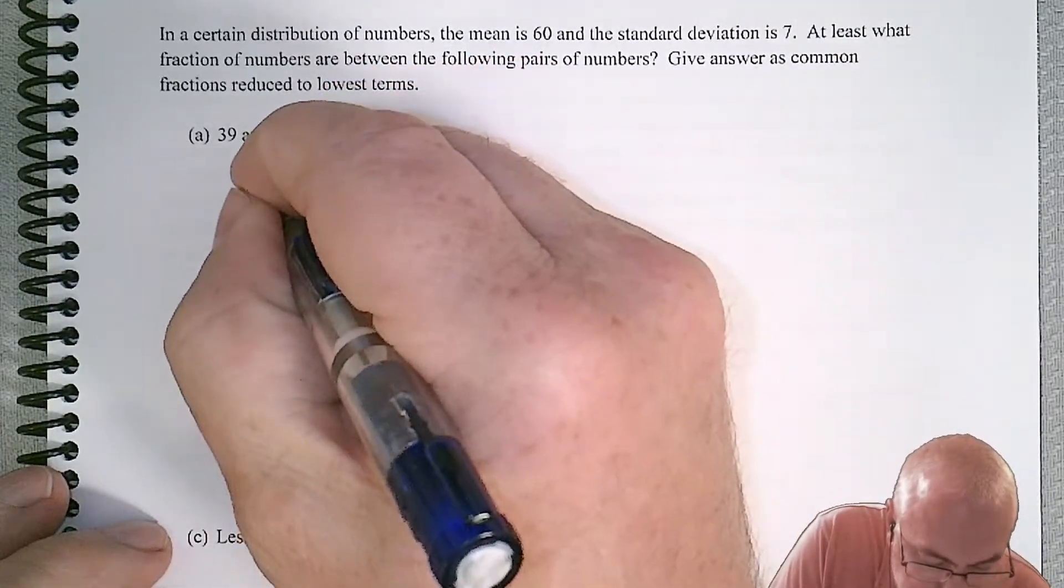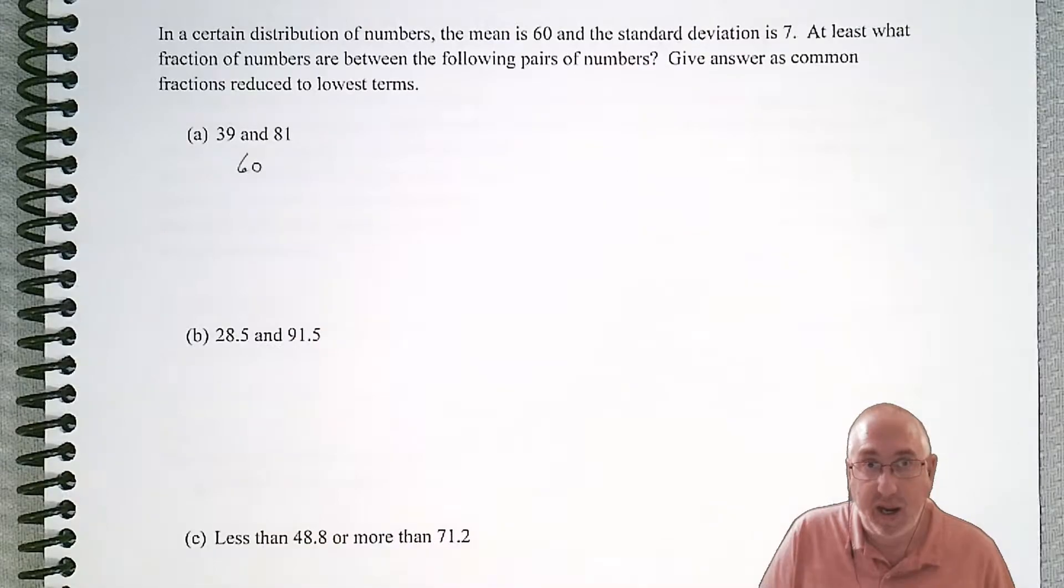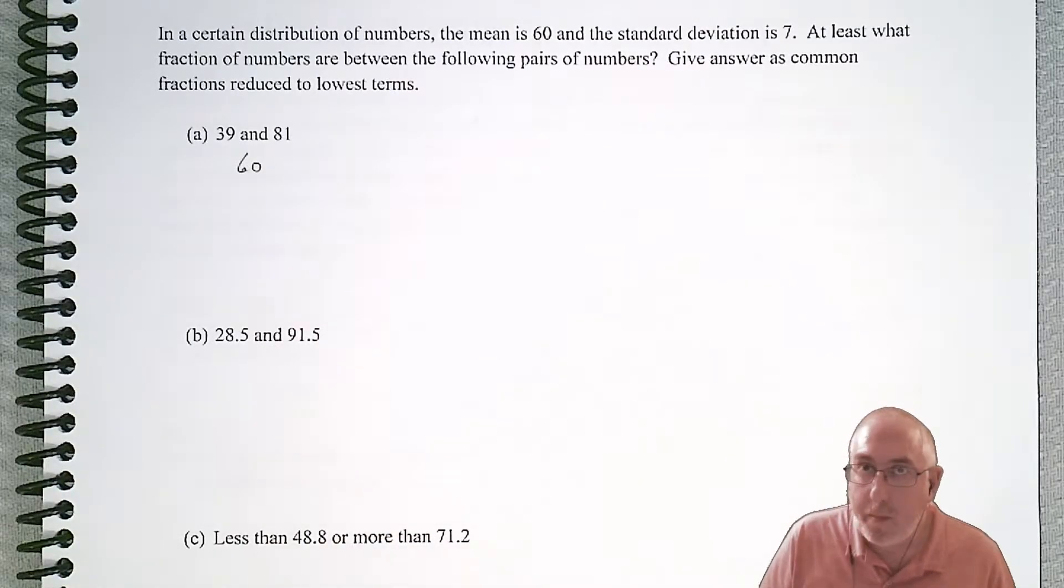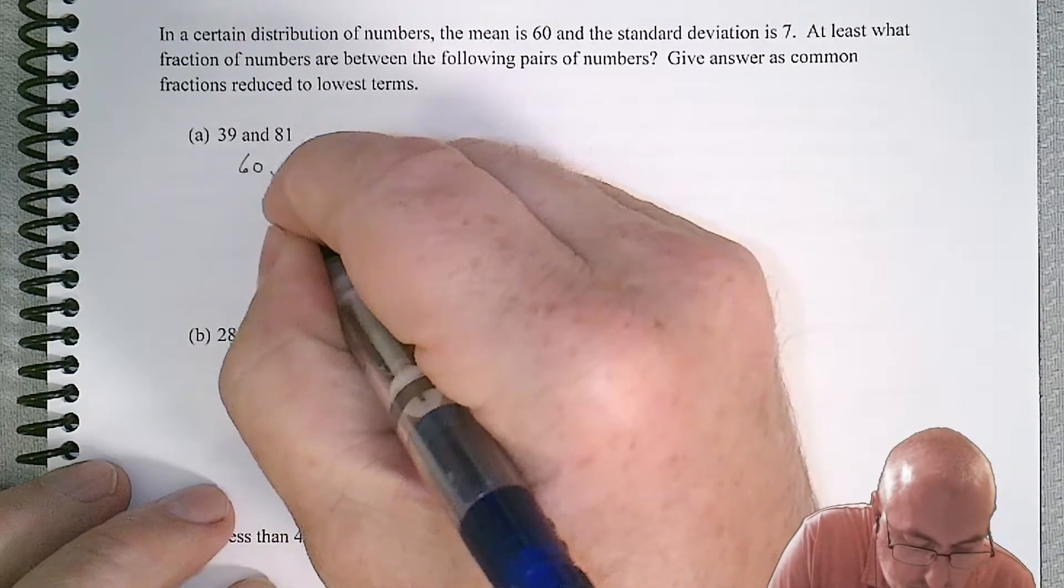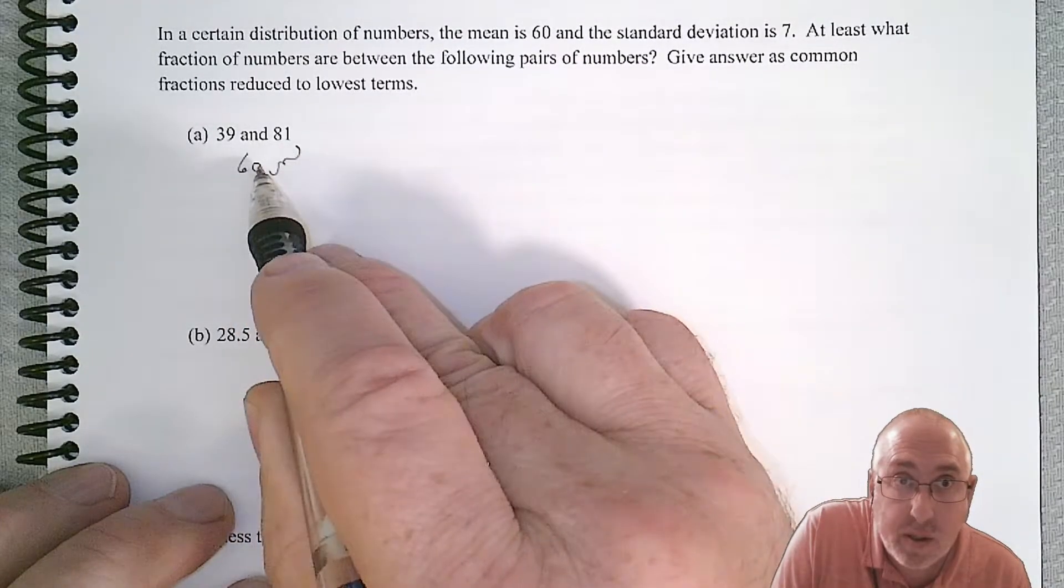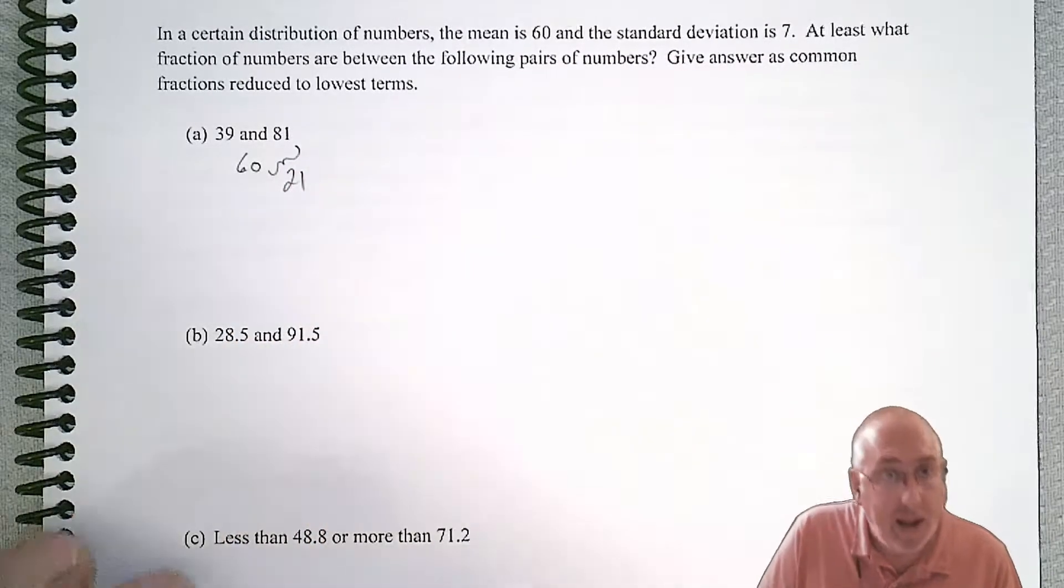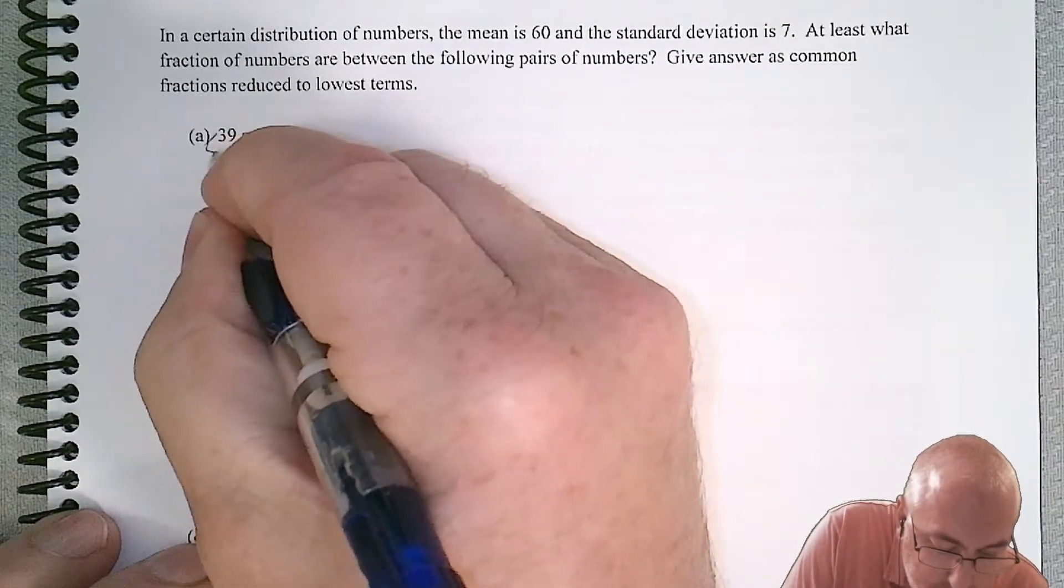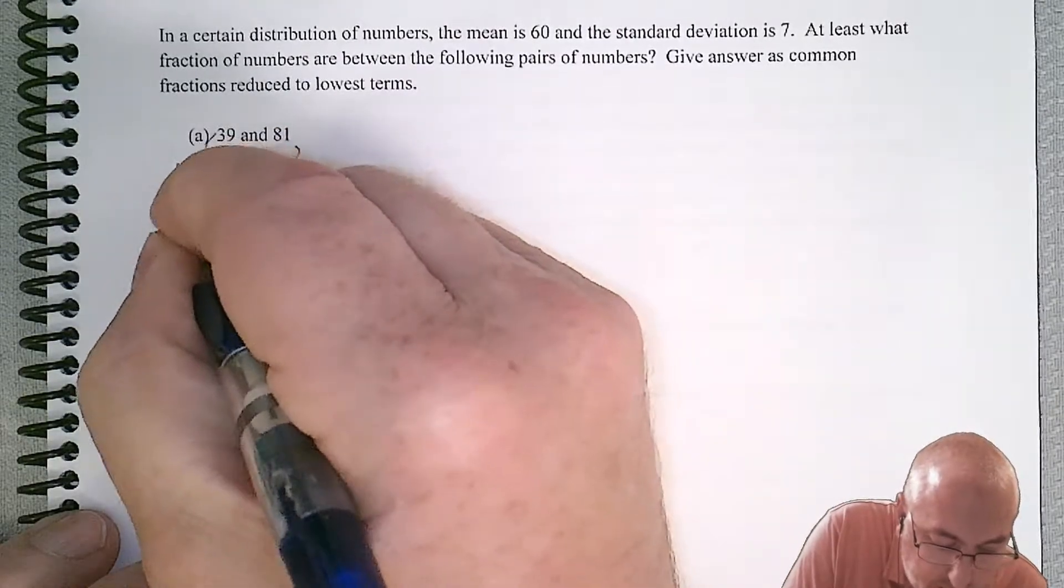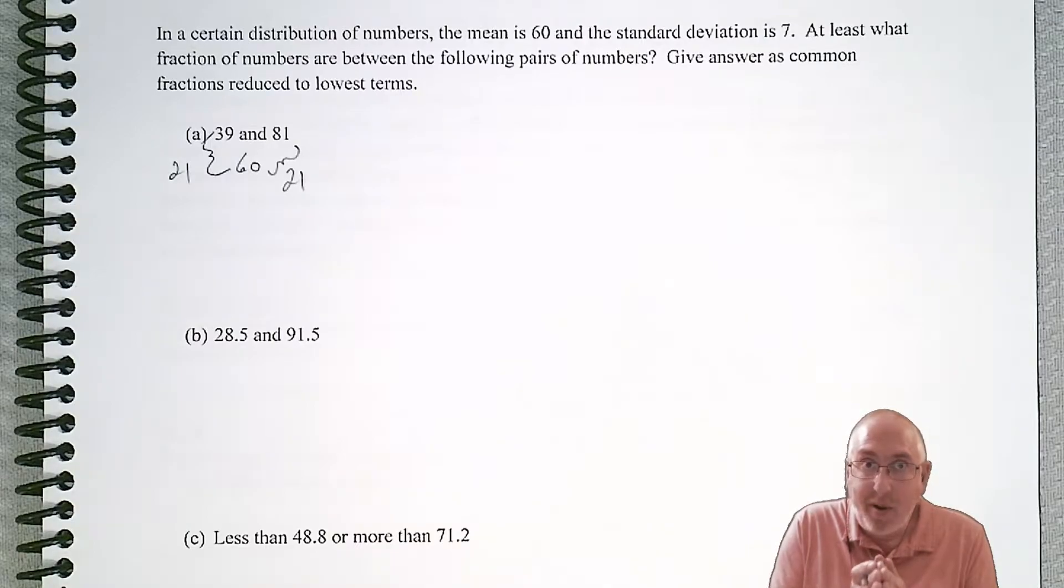The first thing we should do is just confirm that 60 is in the middle of that interval from 39 to 81. We can do that by doing a little bit of subtraction. If we subtract those two numbers, we can see that 21 is the difference. And if we do it on the other side, we also get 21. So we know that 60 is in the middle of that interval.